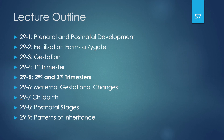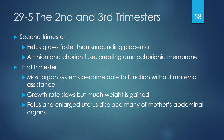Now let's discuss section 29.5, the second and third trimesters. In the second trimester, the fetus starts to grow much faster than the surrounding placenta. The amnion and chorion fuse to create the amniochoronic membrane. In the third trimester, most organ systems are pretty well developed, though not entirely mature — they can function without maternal assistance, but any baby delivered prematurely may require additional care in a neonatal intensive care unit. The growth rate slows somewhat but weight increases considerably.